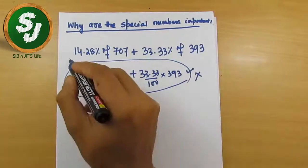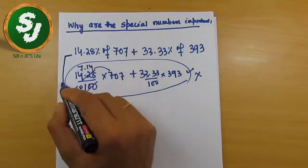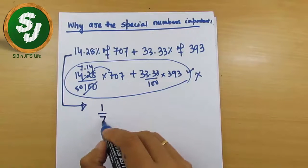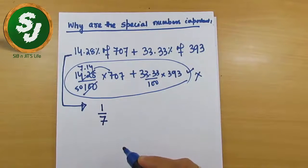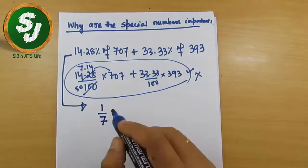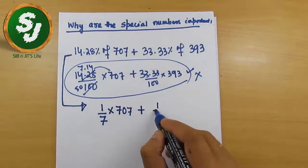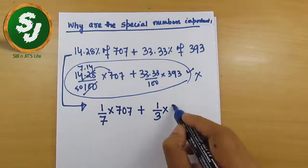So how will you deal with it? Actually, the question looks scary but it's not. 14.28% means 1/7. This is a spatial number which students are expected to know. 1/7 of 707 plus 33.33% is 1/3 of 393.